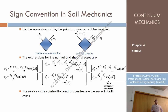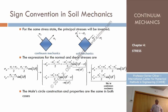For instance, sigma 1, the larger principal stress, is tensile, and sigma 2, the compressive one, is negative. That's why sigma 1 is larger and sigma 2 is smaller. Note: there is a mistake in that plot that needs to be corrected — the arrow should go outside and the other should go inside. So these refer to the same stress state.